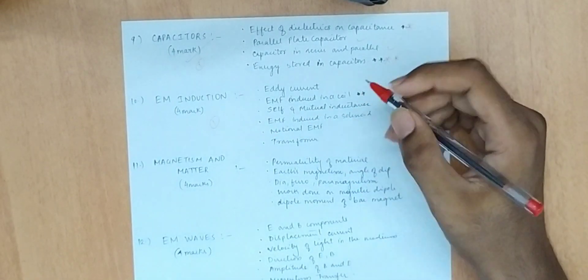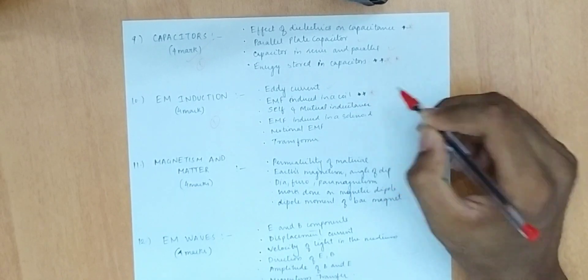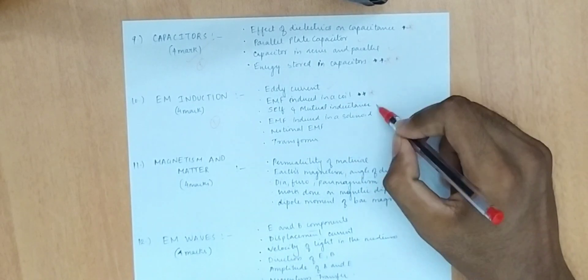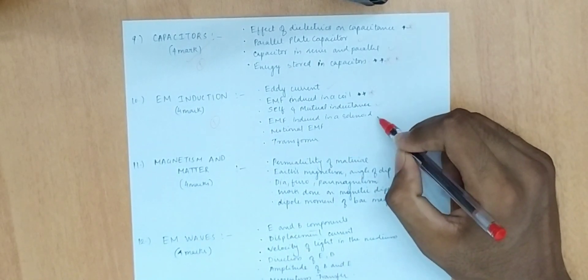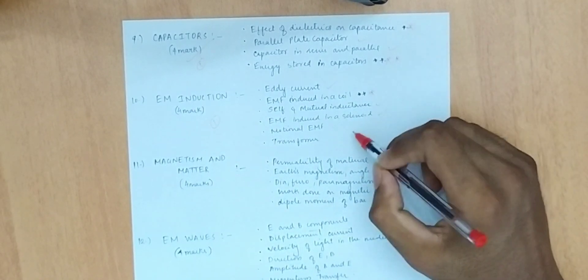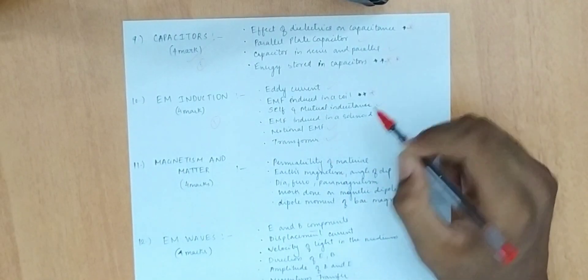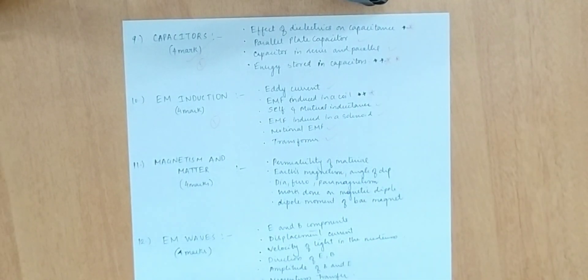Electromagnetic induction is important. Topics include EMF in a coil, self and mutual inductance, motional EMF, EMF in a solenoid, and transformers.